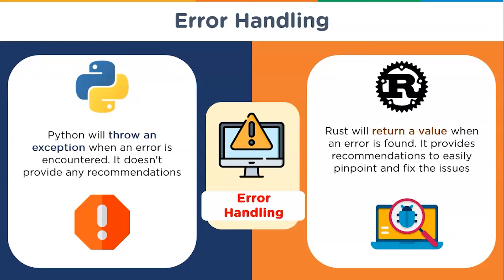Rust provides an easier and improved debugging experience than many other compiled languages. This experience is backed by features like memory management, and in contrast to Python, it provides some recommendations to easily pinpoint and fix issues.